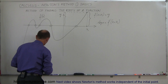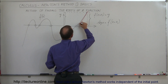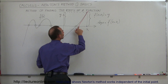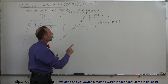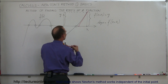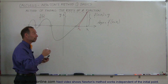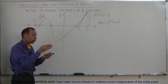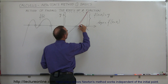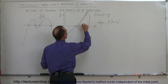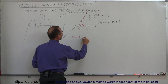Now let's see what we can do with that slope. If we draw a straight line with that slope from that point, we end up at this point right here. Notice how much closer that point is to the actual root than our first guessed point. We should mathematically be able to figure out that point, and we'll call it x₂. The difference between x₁ and x₂ we'll call delta x, so x₂ equals x₁ minus delta x.